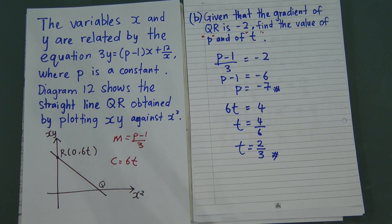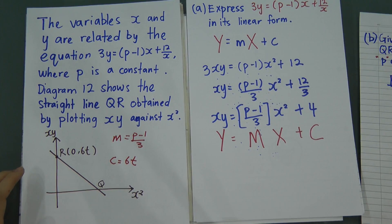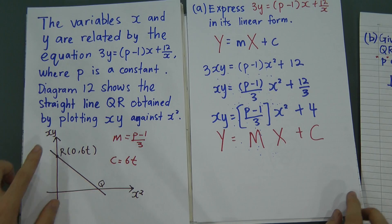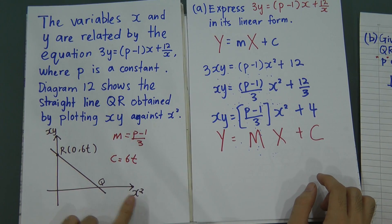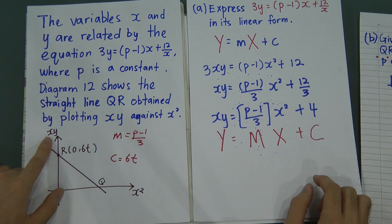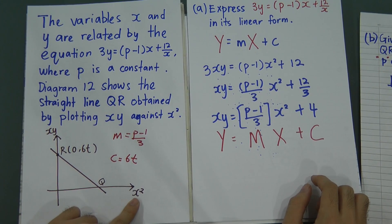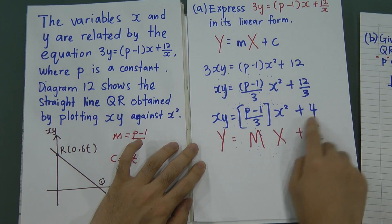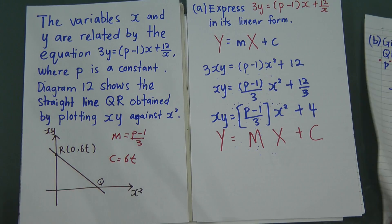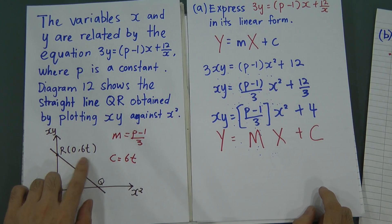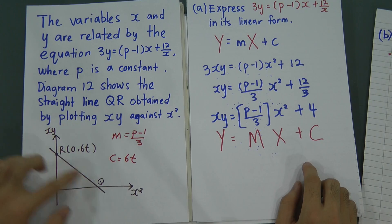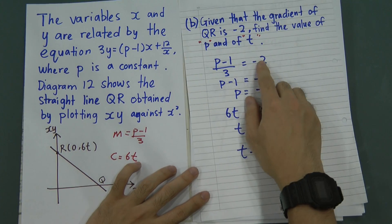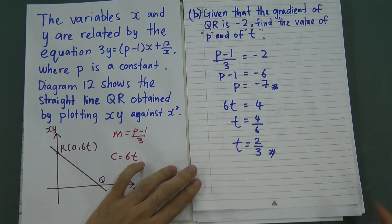That's all for this question — it's quite simple. The steps are: first, rearrange the given equation into linear form by making sure you identify the correct Y and X axes. Then use c = 4 to get 6t = 4, and use gradient = −2 with (p−1)/3 to solve for p and t.